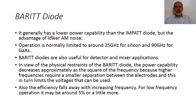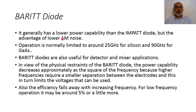In general, the BARITT diode has lower power capabilities than the IMPATT diode because of the loss mechanism in the BARITT diode. But it has the advantage of lower AM noise or amplitude modulation noise. The operation of the BARITT diode is normally limited to around 25 GHz for silicon and 90 GHz for gallium arsenide, so the BARITT diode has a limited frequency range, much lower than the IMPATT diode.